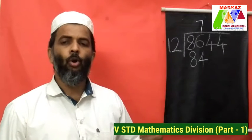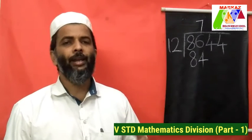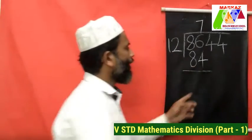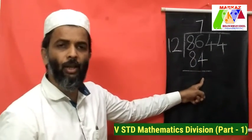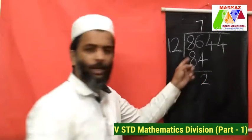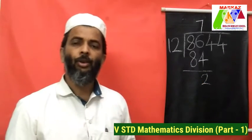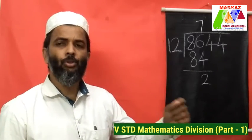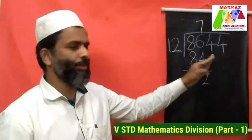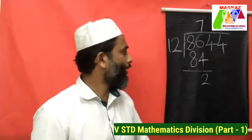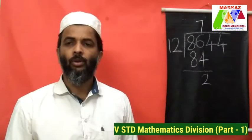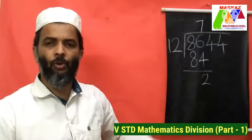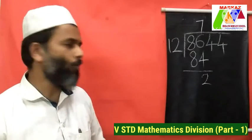The next step is subtracting. Subtracting 86 and 84 gives you: 6 minus 4 is equal to 2, and 8 minus 8 is 0. The next step is to bring down the next digit, which is 4. Bringing down 4 gives us 24.